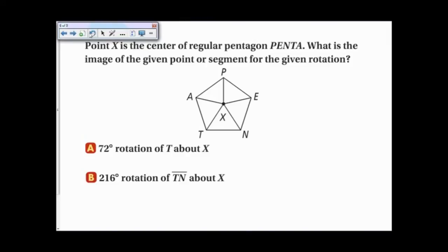Next, we will look at a problem like this. Point X is the center of a regular pentagon, PENTA. What is the image of the given point or segment for the given rotation? Now, before we look at problems A and B, we have to know what these angles are in here. They're all the same, I just need to know what they are. Now if you think about it, this is going all the way around. So it is 360 degrees. And there are 1, 2, 3, 4, 5 angles. And so each one will be 72 degrees. That's important for us.